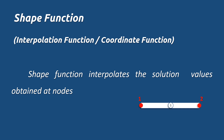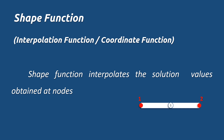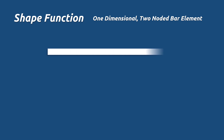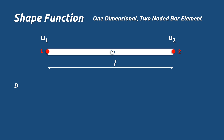Let's find the expression for the shape function for a one-dimensional two-noded bar element. Consider an element of length L with two nodes, node 1 and node 2. Let u1 and u2 be the displacements at the two nodes. If the displacements u1 and u2 are known, then the displacement at any point on the element throughout the length L can be found by the equation: u = N1·u1 + N2·u2.